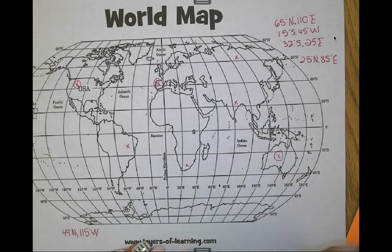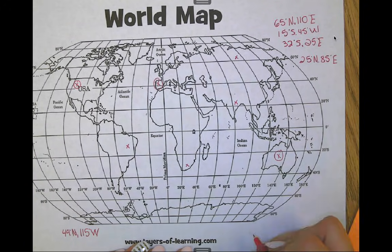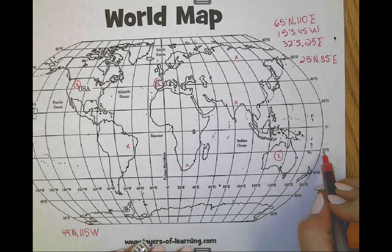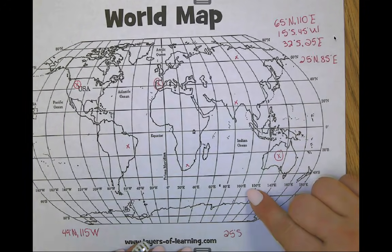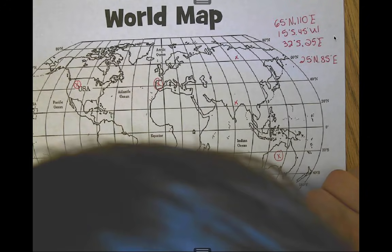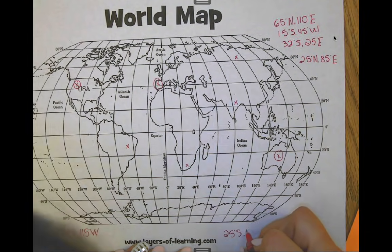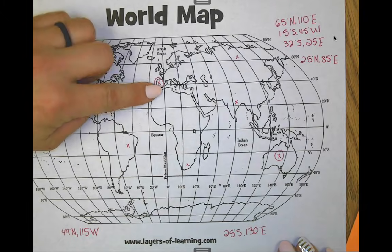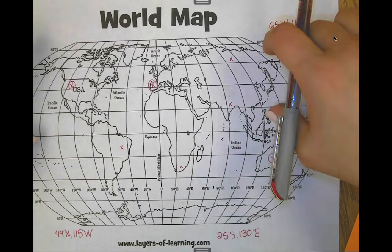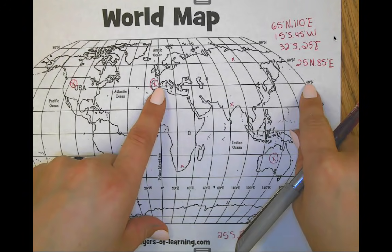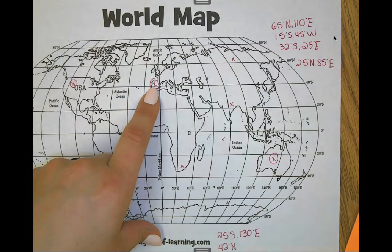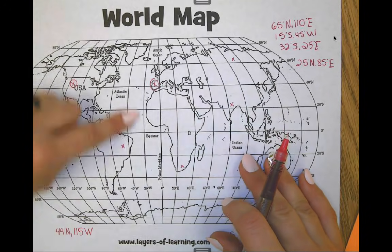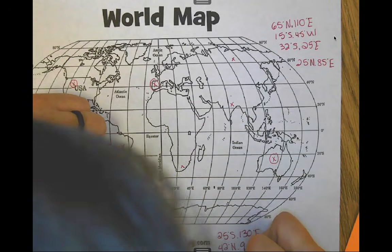Coming over to Australia — starting first with latitude. Here's zero degrees, coming down a little past 20, between 20 and 40, I'd say 25 degrees south. Then using our lines of longitude, it's going to be between 120 and 140 — pulling my line down, about 130 degrees east. Our final location in Europe — starting with latitude, it's definitely in the northern hemisphere. About 42 degrees north. Is it eastern or western? It's just on the west side of the prime meridian, so I'd say about 9 degrees west.